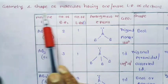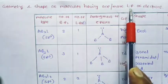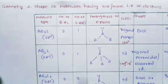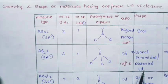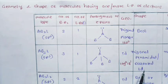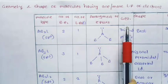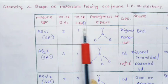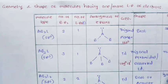Next we look at the geometry and shape of molecules having one or more lone pairs of electrons. We will find the geometry based on the number of bond pairs and lone pairs present around the central atom.